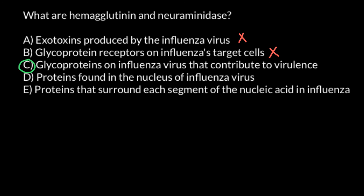Let's check the remaining answers. Answer D — proteins found in the nucleus of the influenza virus — we know those are called NP, nuclear proteins, so this is the wrong answer. The last answer — proteins that surround each segment of the nucleic acid in influenza — is also the wrong answer.